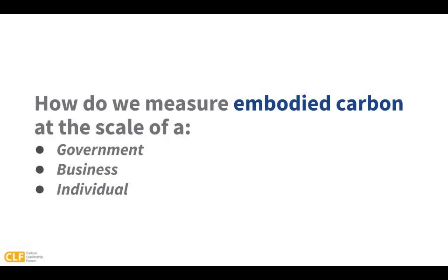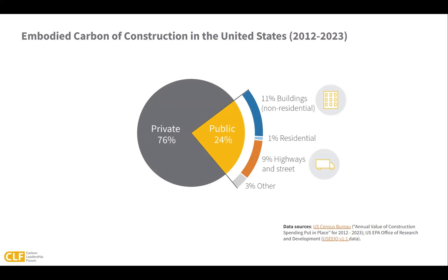When we look at embodied carbon impacts in the United States over a 10-year period, about one quarter of all impacts occur from public construction of buildings and infrastructure. This is why we see a lot of government procurement policies focused on lower carbon materials. You'll learn more about these buy clean policies in module five. The public sector purchases about 50% of the cement produced in the United States and about one fifth of the steel produced. We have a lot of individual governments taking a closer look at their purchasing practices to identify where they can reduce their embodied carbon impacts.